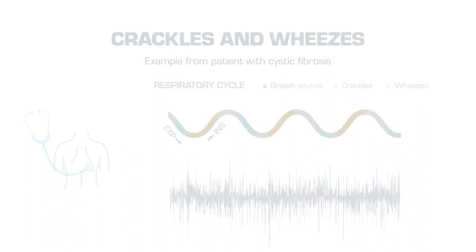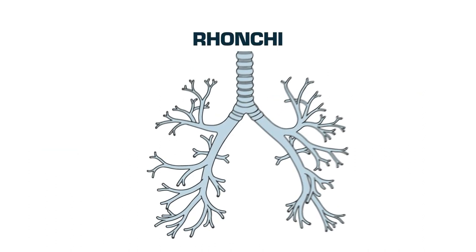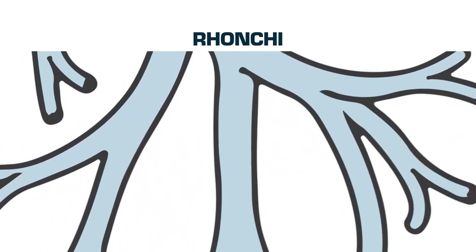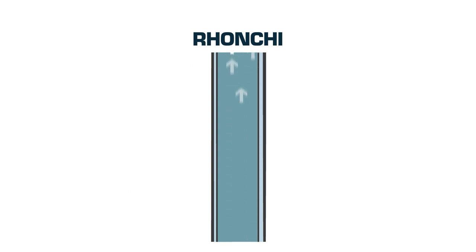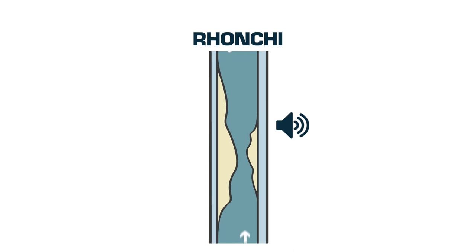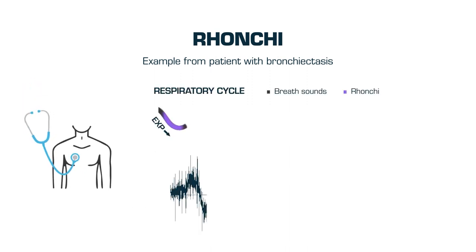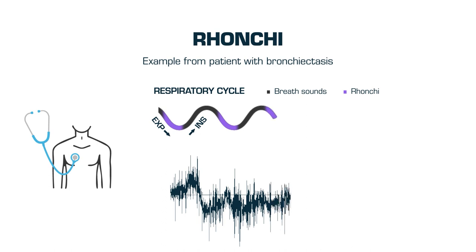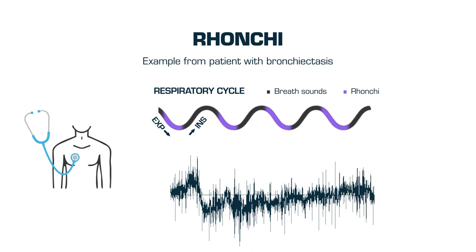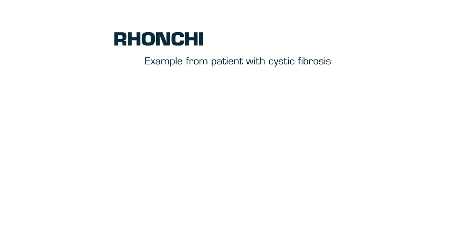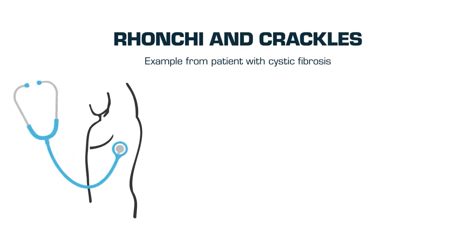Other adventitious sounds that can be found are the ronchi. These sounds are similar to long, polyphonic, low-frequency wheezes, predominantly expiratory. They indicate the presence of secretions that reduce the calibre of the airway at the proximal level. In this case, we heard ronchi in a patient with bronchiectasis auscultated in the anterior chest. In another example, a patient who has cystic fibrosis is presented with ronchi and crackles, auscultated in the left lateral chest.